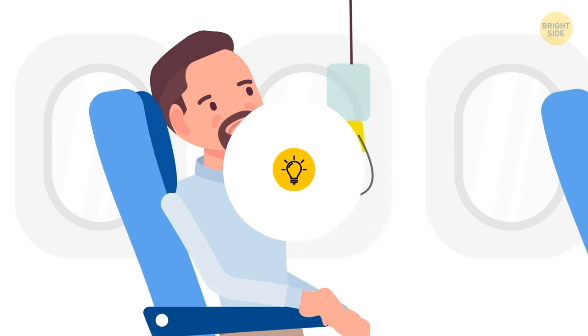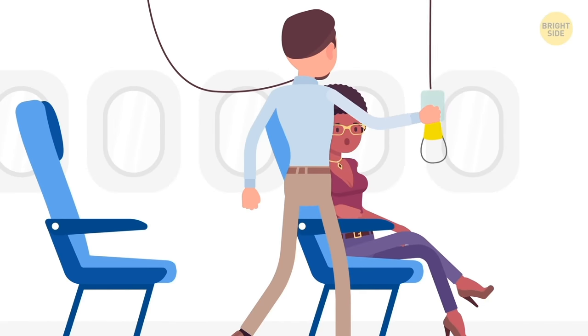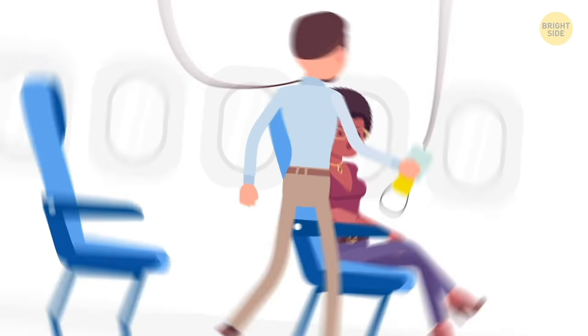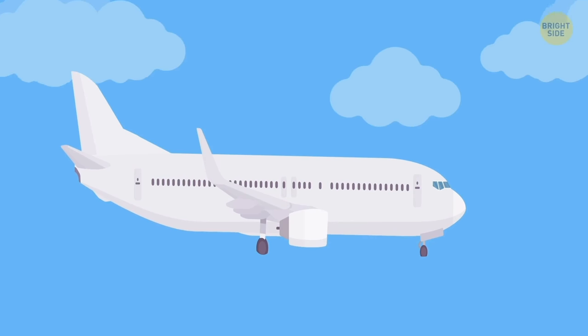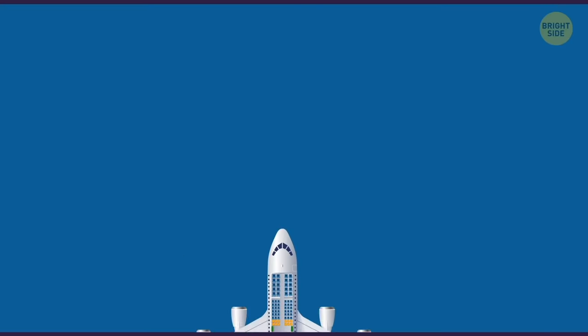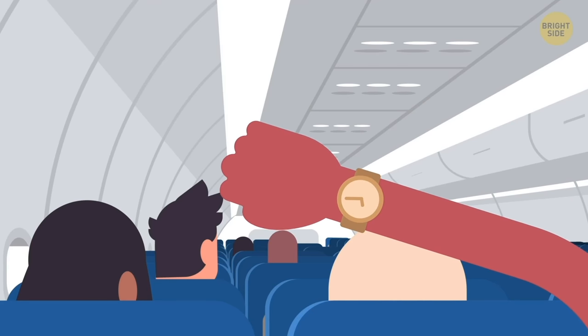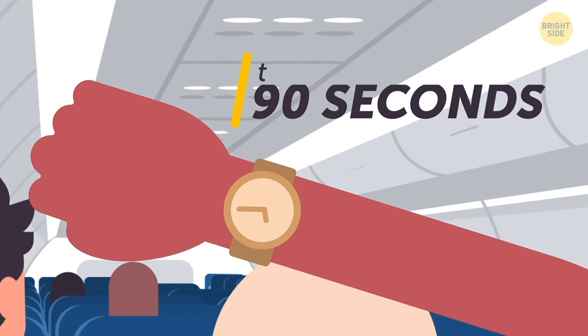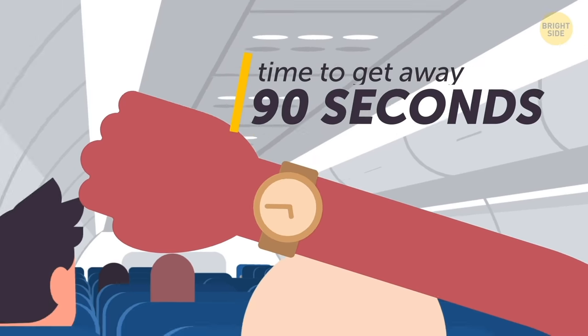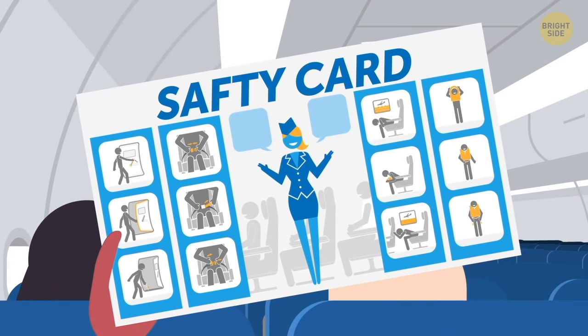If breathing masks emerge, put on yours immediately and only then pay attention to those around you. Try to fly on bigger planes. They can absorb more impact during extreme landings. The best seats you can get are the five rows nearest to the emergency exits. Statistically, the ideal time to get away from the plane after a crash landing is around 90 seconds. Read the safety card and follow all the instructions of the crew.